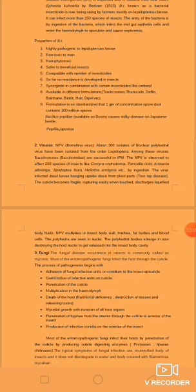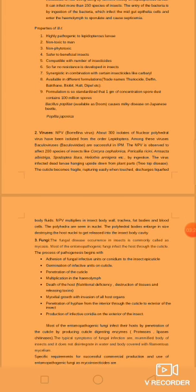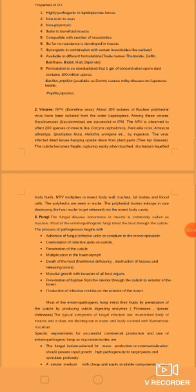The NPV is observed to affect about 200 species of insects like Cauciria, Cephalorica, Pericella, Richene, etc., primarily from Spodoptera and Lepidoptera. By ingestion, the virus infects the host and dead larvae hang upside down from plant parts, a symptom known as treetop disease. The polyhedra are seen in nuclei; the polyhedra bodies enlarge in size, destroying the host nuclei and get released into the insect body cavity.